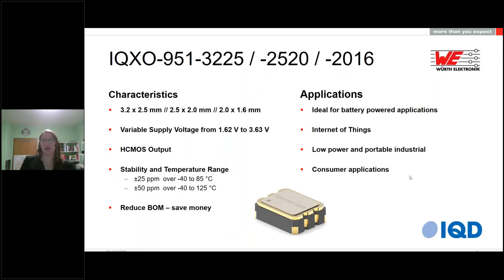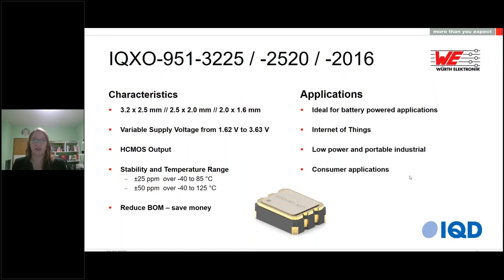With this kind of product, if your battery loses power and the voltage drops below the normally required level, it doesn't matter — because this oscillator can still handle it and will work with the specified accuracy. We offer this in temperature ranges of minus 40 to 85 or minus 40 to 125 degrees. It's perfectly suited for battery-powered applications like Internet of Things, wearable consumer applications, and portable industrial applications. It also gives you the opportunity to reduce your BOM.